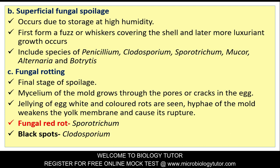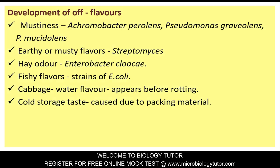Fungi involved in superficial spoilage include species of Penicillium, Cladosporium, Sporotrichum, Mucor, Alternaria, and Botrytis. Fungal rotting - the final stage of spoilage: Mycelium of the mold goes through the pores or cracks in the egg. Gelling of egg white and colored blots are seen. Hyphae of the mold weaken the yolk membrane and cause its rupture. Fungal red spot is caused by Sporotrichum; black spots by Cladosporium.